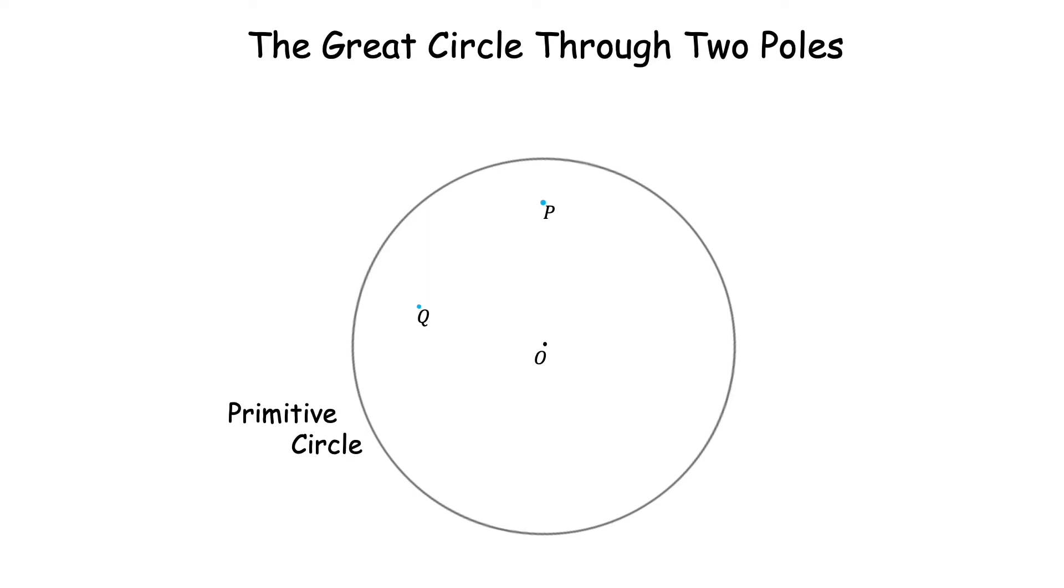We have here two poles P and Q inside the primitive circle with center O. A pole in stereographic projection represents a direction in space. So two poles here P and Q represent two distinct directions in space.